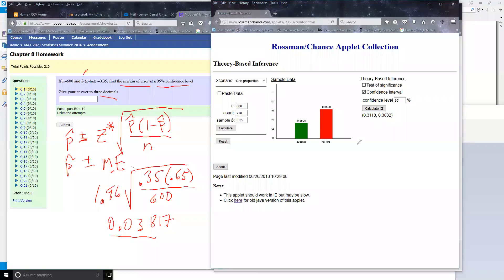Well, if you go back to my work here, over here, what do I have? So I'll have 0.35 plus or minus 0.03817.